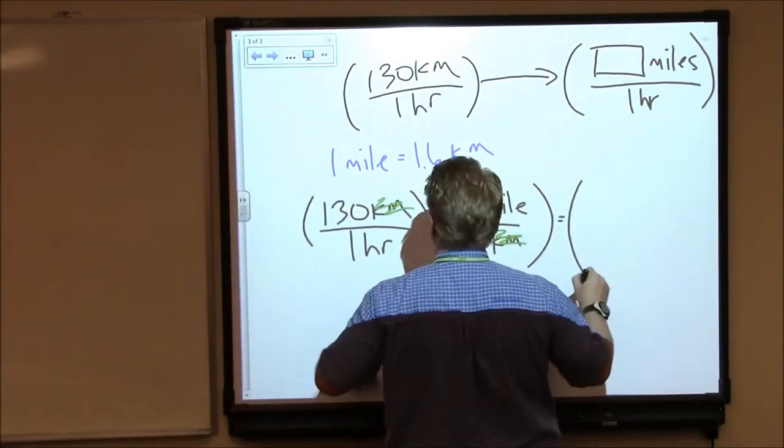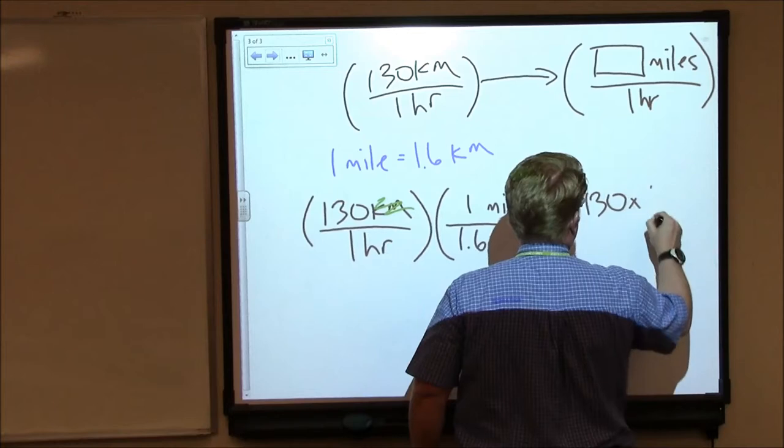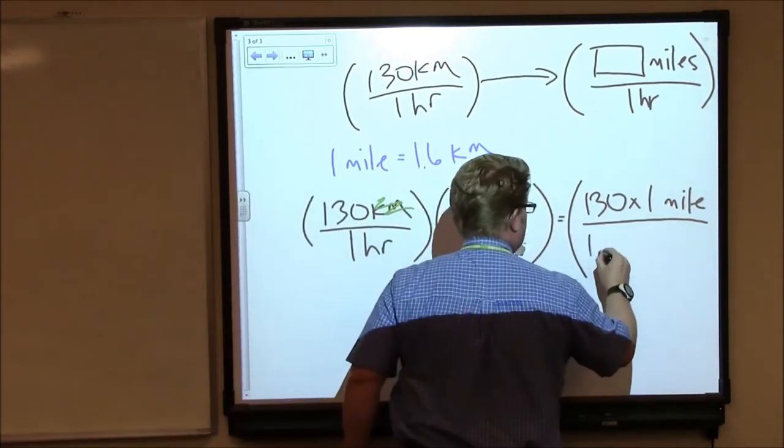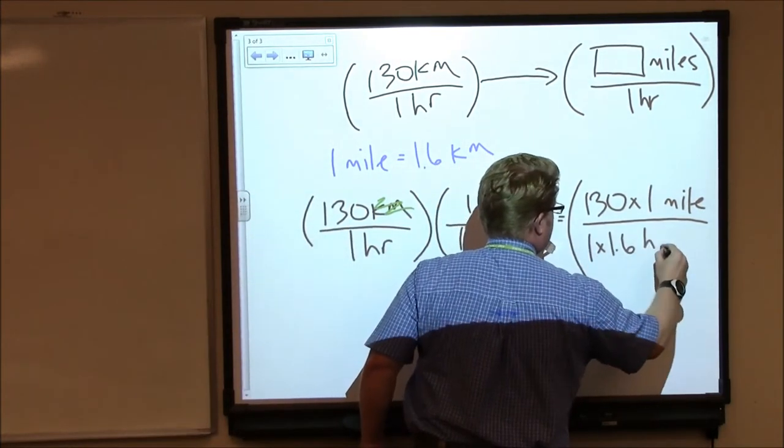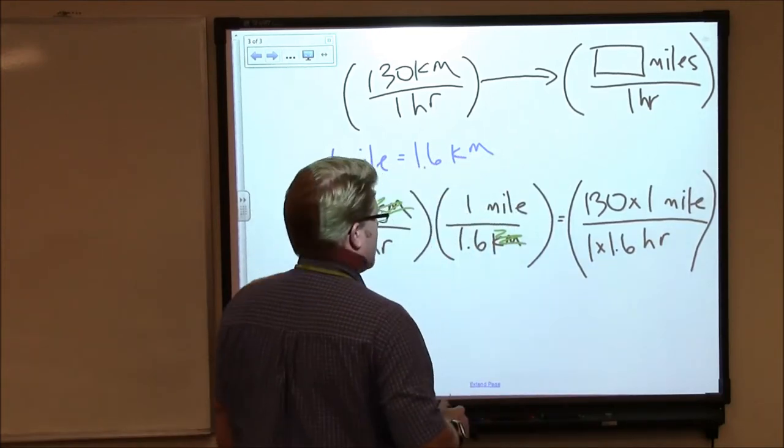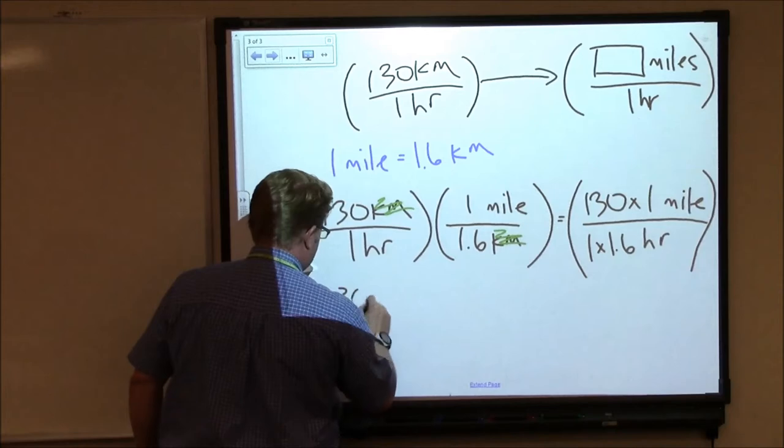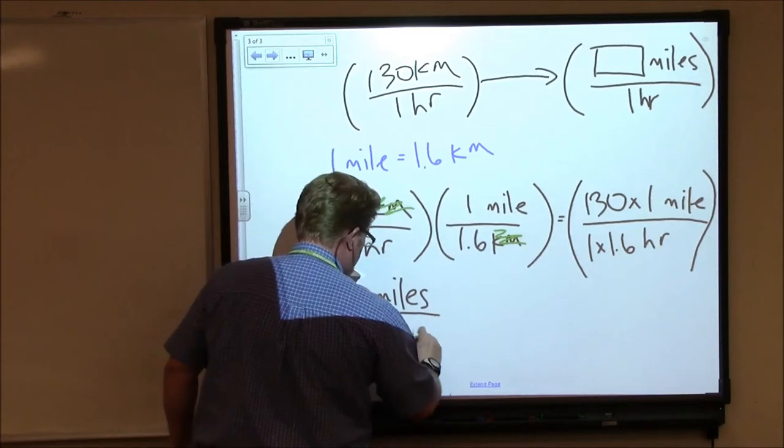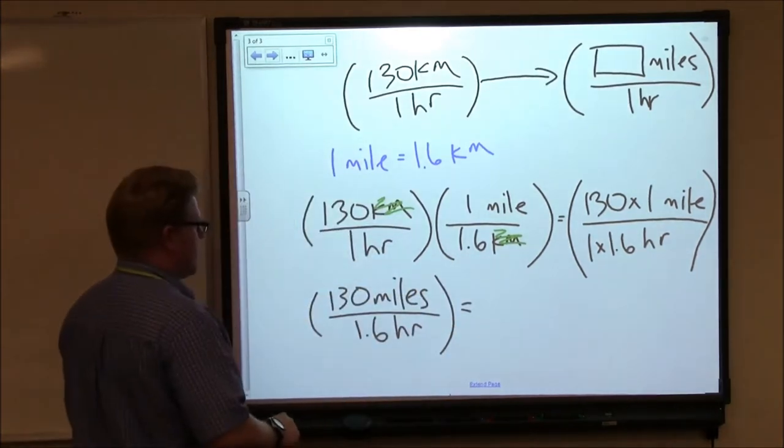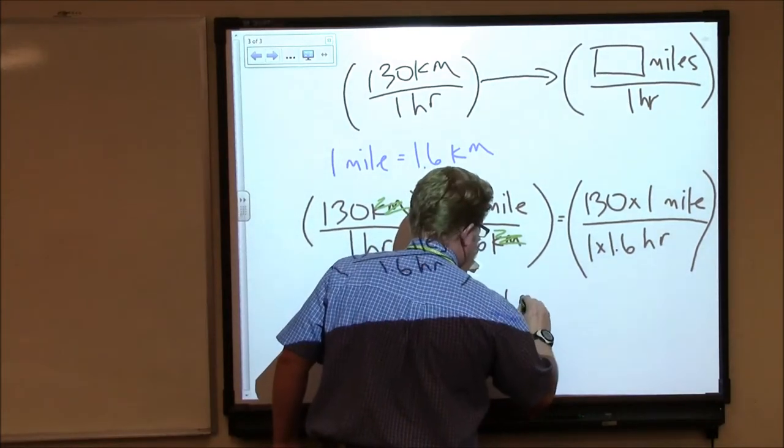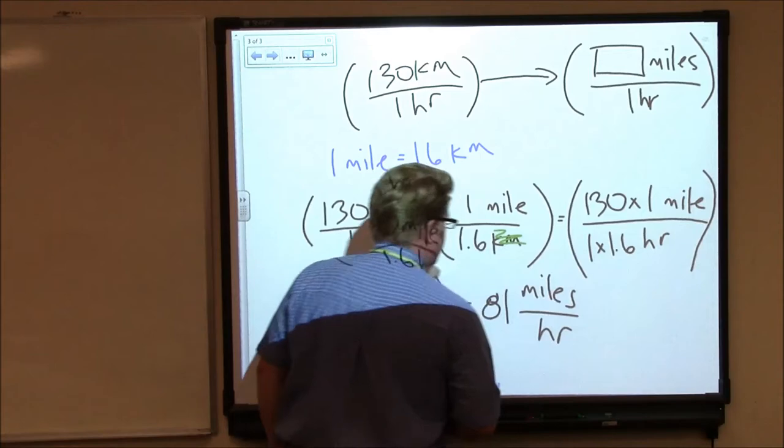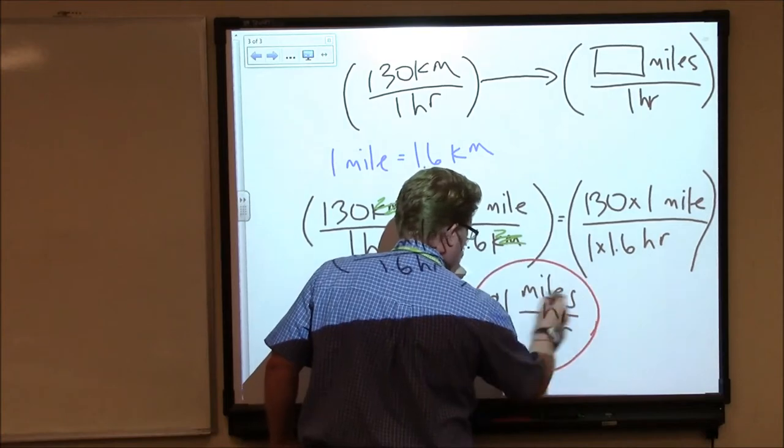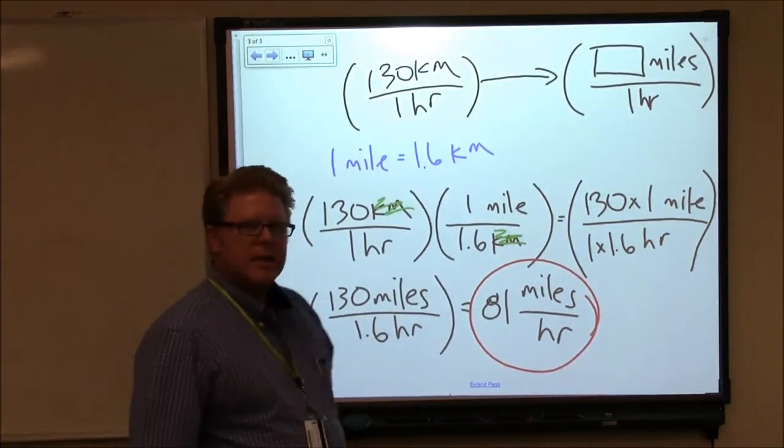That's really easy. So that works out to 130 times 1 mile on the top and 1 times 1.6 hours on the bottom. That's 130 miles in 1.6 hours. We do the math, and we find that that works out to just about 81 miles in one hour. So there's our answer, 81 miles in one hour.